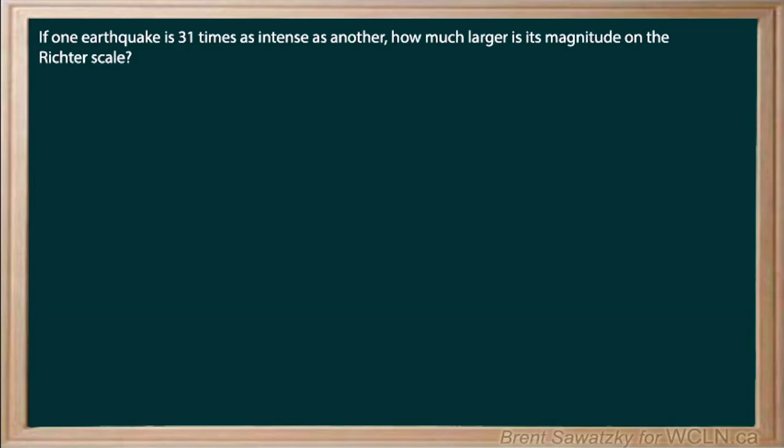Okay, so in this question, we're told that one earthquake is 31 times as intense as another. So let's pull out our intensity equation here. And we know that the first earthquake, base intensity, 10 to the, and we don't know what it is on the Richter scale here.